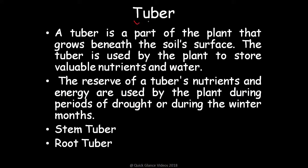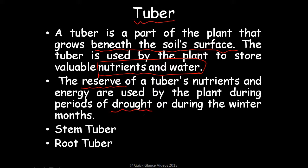A tuber is a part of the plant that grows beneath the soil surface. The tuber is used by the plant to store valuable nutrients and water. It acts as a reserve for nutrients during stress periods such as drought or winter months, helping the plant survive under stress conditions.